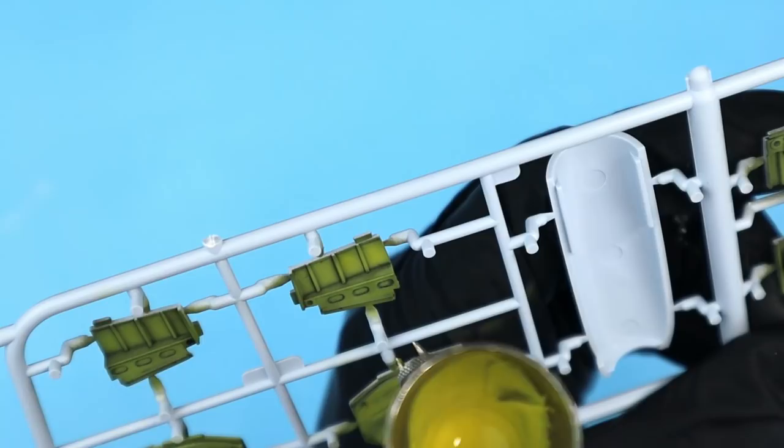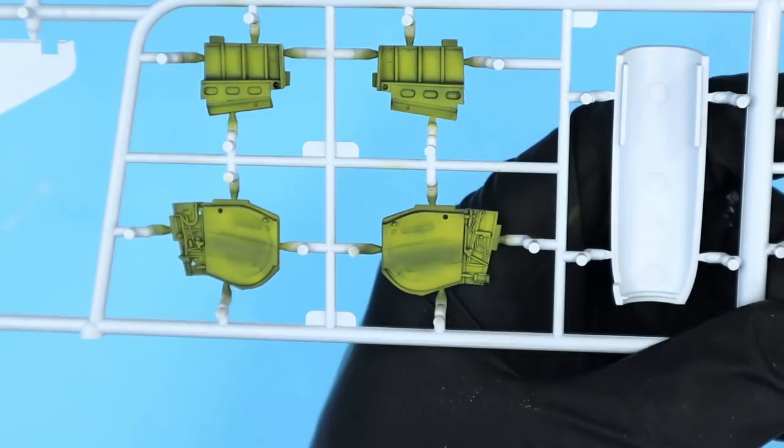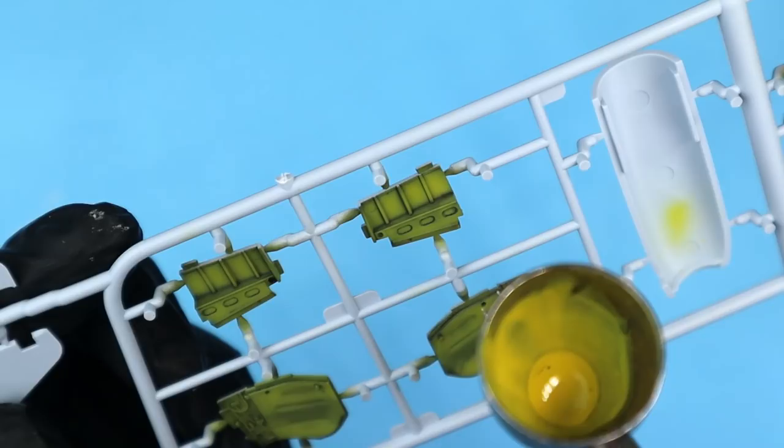Now the wheel base and some of the other interior parts were actually painted a yellow zinc chromate versus the interior green so I came back with a straight mixture of yellow zinc chromate and sprayed it over those particular parts.